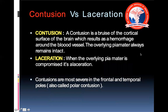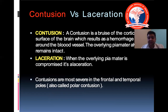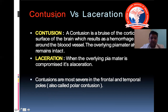A contusion is a bruise of the cortical surface of the brain resulting in hemorrhage around blood vessels. The overlying pia mater always remains intact — pia means 'mother' and it is the layer of meninges most closely attached to the brain. A laceration is when the overlying pia mater is compromised. Contusions are most severe in the frontal and temporal poles, also known as polar contusions.